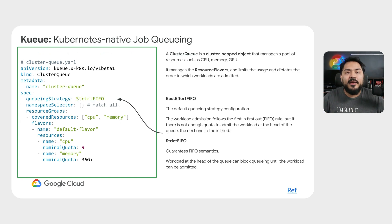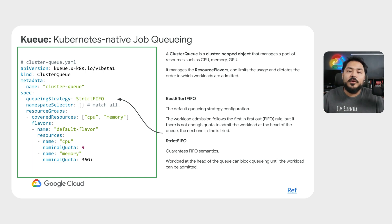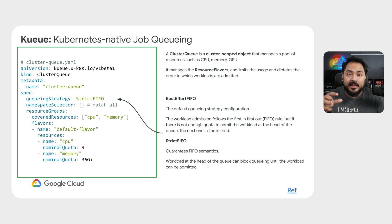Kueue also has ways to control how a workload is scheduled onto the cluster. A cluster queue has two different queuing strategies available: best effort and strict. Best effort is the default mode where a workload is admitted in the order they come in, but if a certain workload cannot be admitted, a different workload that has resources available would be admitted. Strict, on the other hand, is where you want a strict guarantee of workloads being admitted in the order they came into the queue.